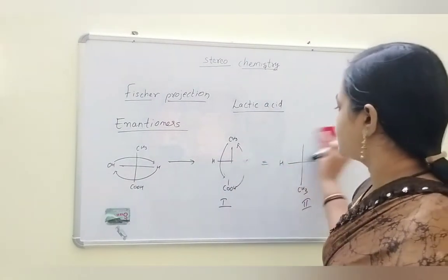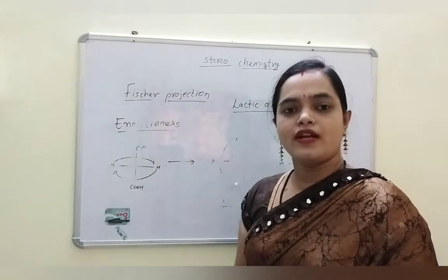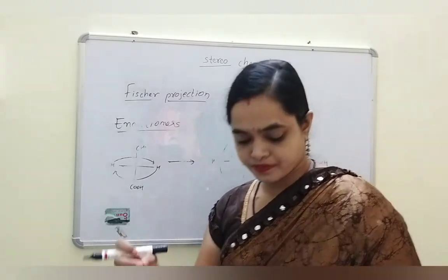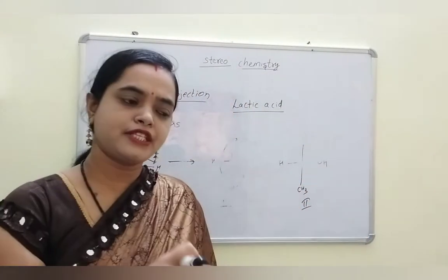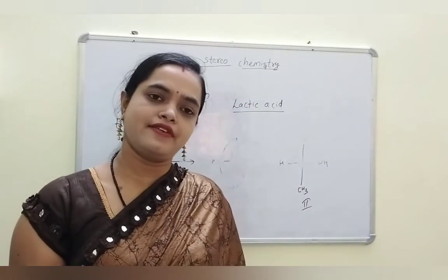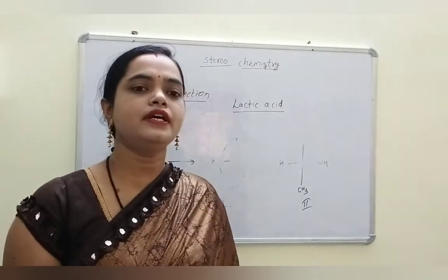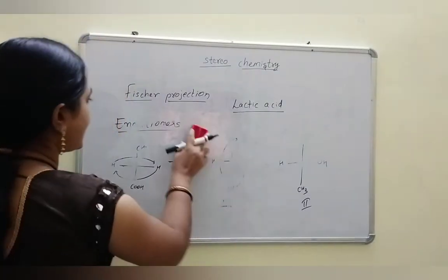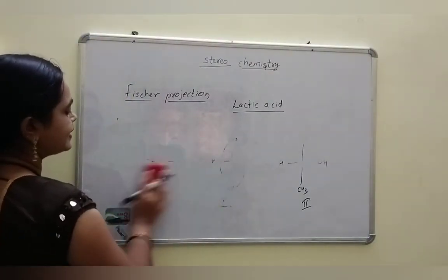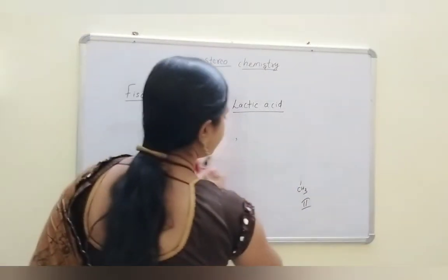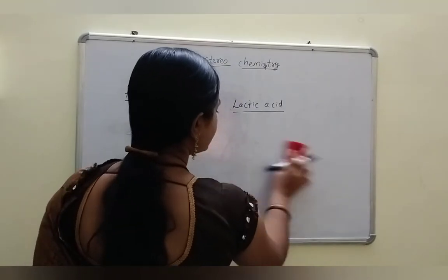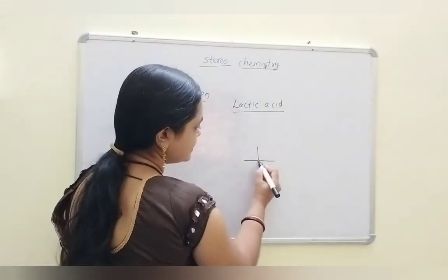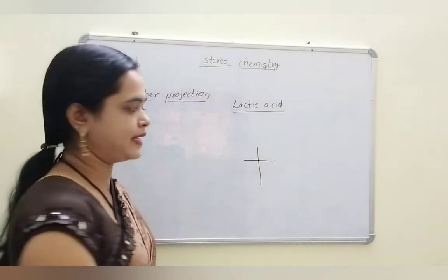In Fischer projection, we take horizontal lines — the bonds towards the observer are placed on horizontal lines. In the same way, bonds away from the observer are placed on vertical lines. The central atom, carbon, is the chiral carbon present at the center.